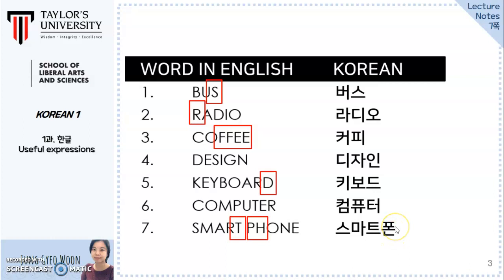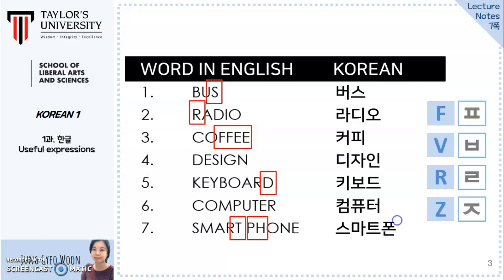Please remember that there are no F, V, R, and Z sounds in the Korean language. These are replaced with P, B, L, and T respectively in borrowing words.